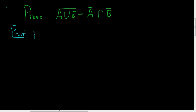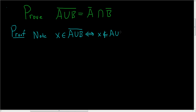Note that X is in the complement of A union B. This is equivalent to saying that X is not in the union. If it's in the complement, then it's not in the set. So the complement of A union B is everything not in A union B.